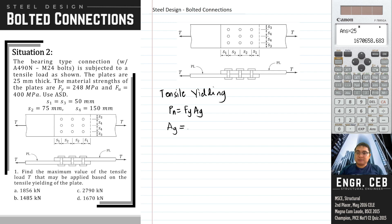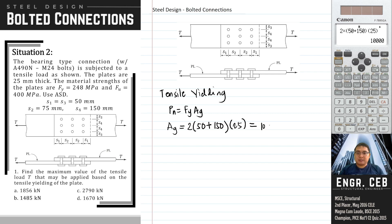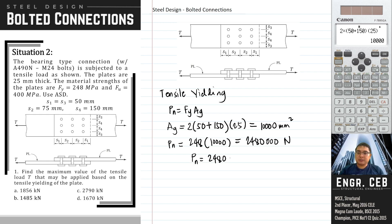We get the total width, which is simply twice of S3 and S4. S3 is simply equal to 50 and S4 is 150. So we multiply this by 25 to get the gross area, which is 10,000 square millimeters. We can now solve the nominal strength for tensile yielding: 248 times the gross area, divided by 1000 to obtain the capacity in kN. That is 2480 kN.